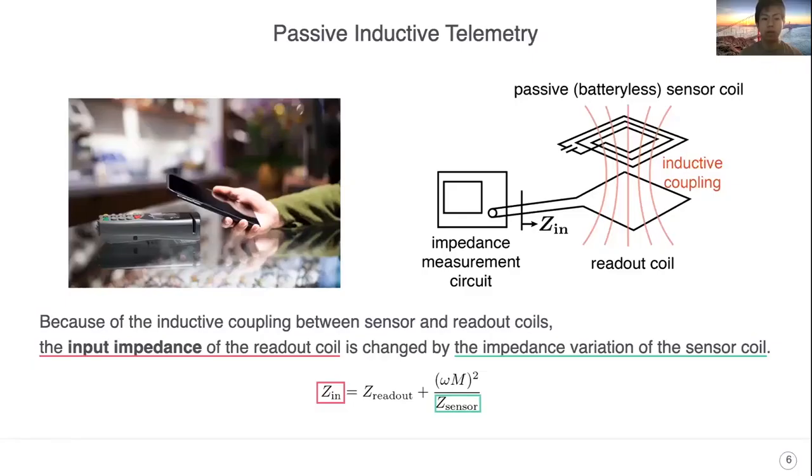To realize TelemetRing, we use passive inductive telemetry. This is one kind of wireless sensing technology, and this mainly uses a passive sensor coil, a readout coil, and an impedance measurement circuit connected to the readout coil.